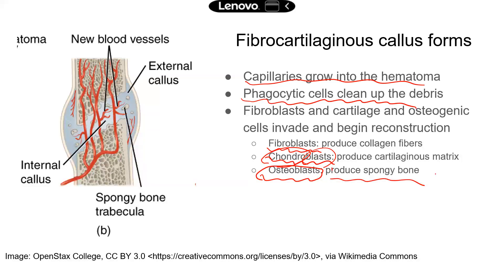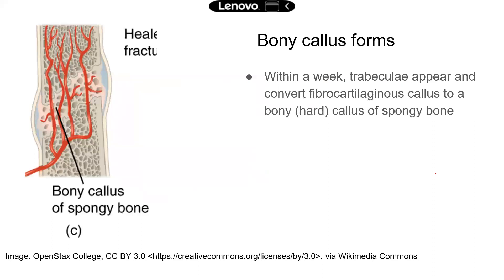Next, the soft callus — the fibrocartilaginous callus — will be converted to a bony callus. You can start to see that osseous tissue begins to form, and mainly the trabeculae will appear. Remember, that's the main structure in spongy bone, and this soft callus will be converted to a hard bony callus.